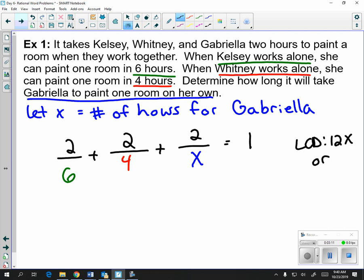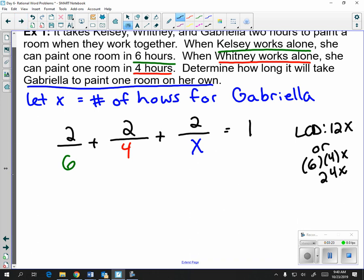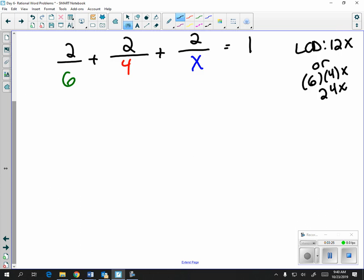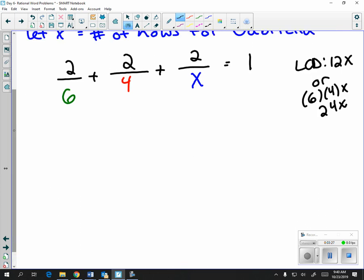Alternatively, you could have made your LCD, if you didn't see the 12, you could have made it 24x. It's not the least common denominator, but it'll still get you the answer. So I'm going to multiply each fraction by what's missing. I have 2/6 plus 2/4 plus 2/x equals 1.